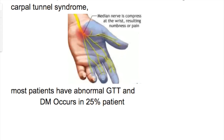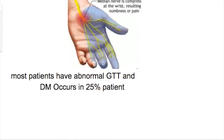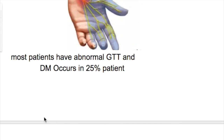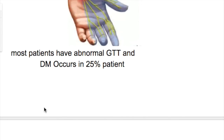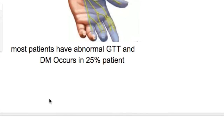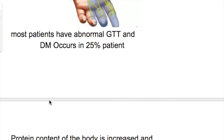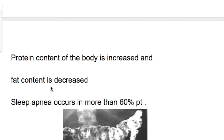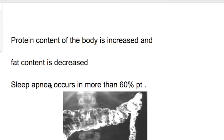The effect of acromegaly on carbohydrate, protein, and fat: most patients have an abnormal GTT and 25 percent of patients develop diabetes mellitus. The protein content of the body is increased and fat is decreased.